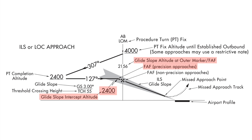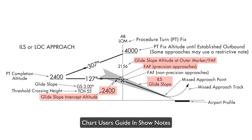The next indication I want to point out is the ILS glide slope — it looks like an arrow, and that is the ILS glide slope. That's another depiction on the FAA charts. There are a lot of other depictions I'm not going to go over right now, but they're in the chart user's guide. I really highly recommend you get that — links are in the show notes.